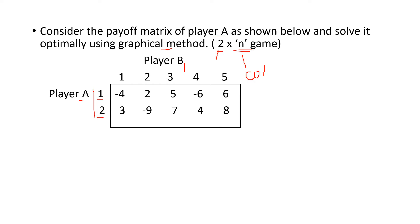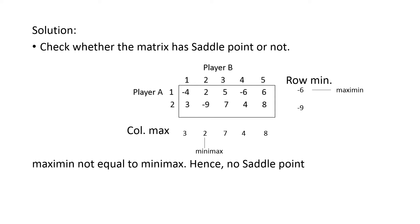First, you have to check whether the matrix has a saddle point or not. For player A there are 2 strategies, and for player B there are 5 strategies. Find the row minimum and from there find the maximum value — that is maximin. Then find the column maximum and from there find the minimum value — that is minimax. Check whether maximin equals minimax. Here both are different, which means there is no saddle point.